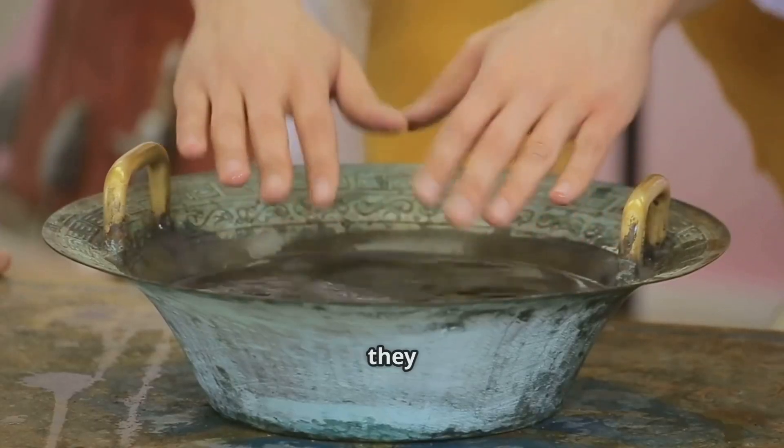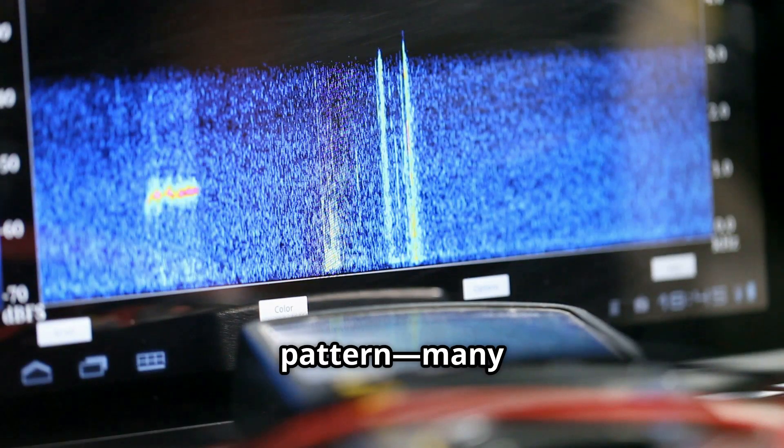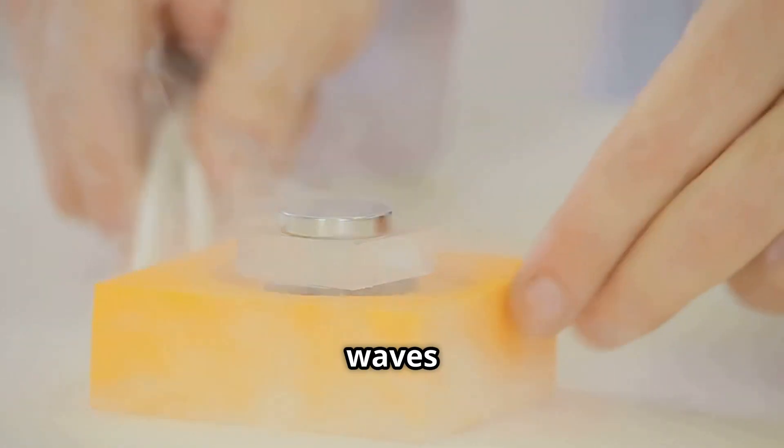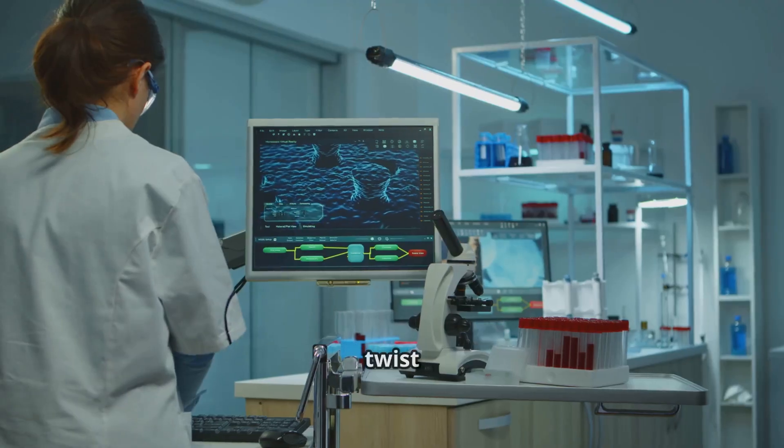But if you send waves through, they create an interference pattern, many lines, showing where waves add up or cancel out. Here's the twist.